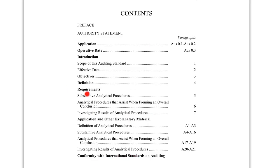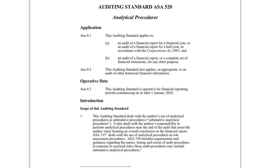The table of contents covers the objectives, definitions, requirements, and explanatory material — which is a good idea to read if you're unsure about my explanation of the standard. This is quite an old standard, produced in 2009, and hasn't really been updated since. Remember that any AUS paragraphs are only related to Australian firms — they're new paragraphs.